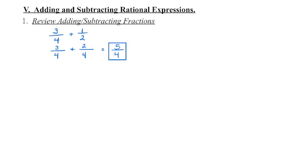Remember that when we add or subtract fractions, we first need to find a common denominator. So in this case I can see that my lowest common denominator is 4, so I'm going to multiply that denominator by 2 in order to get to 4, and then I need to multiply the numerator by the same amount to keep it equivalent.